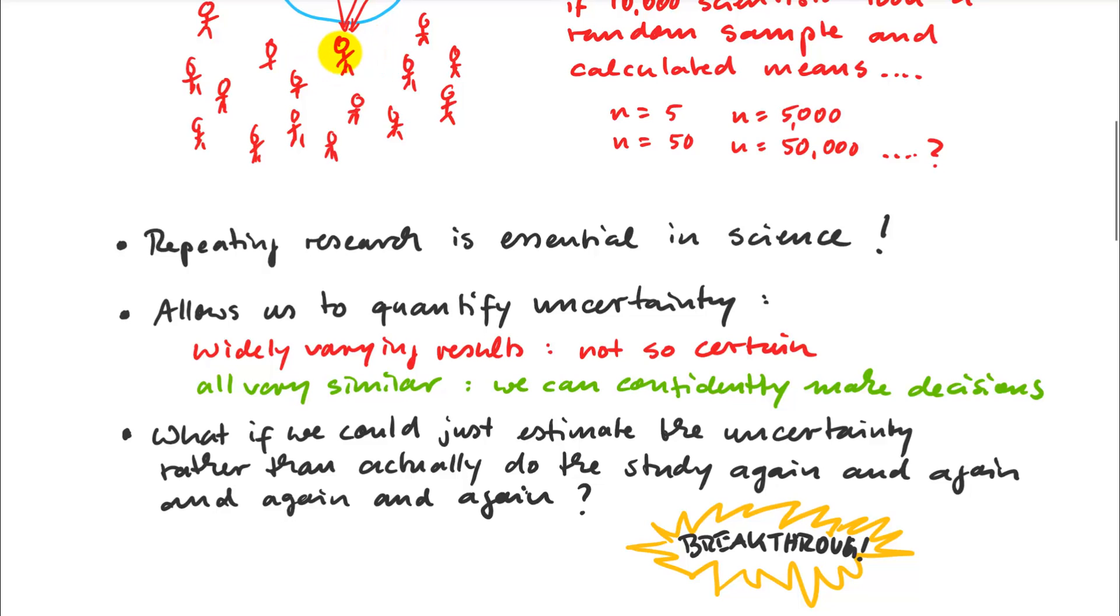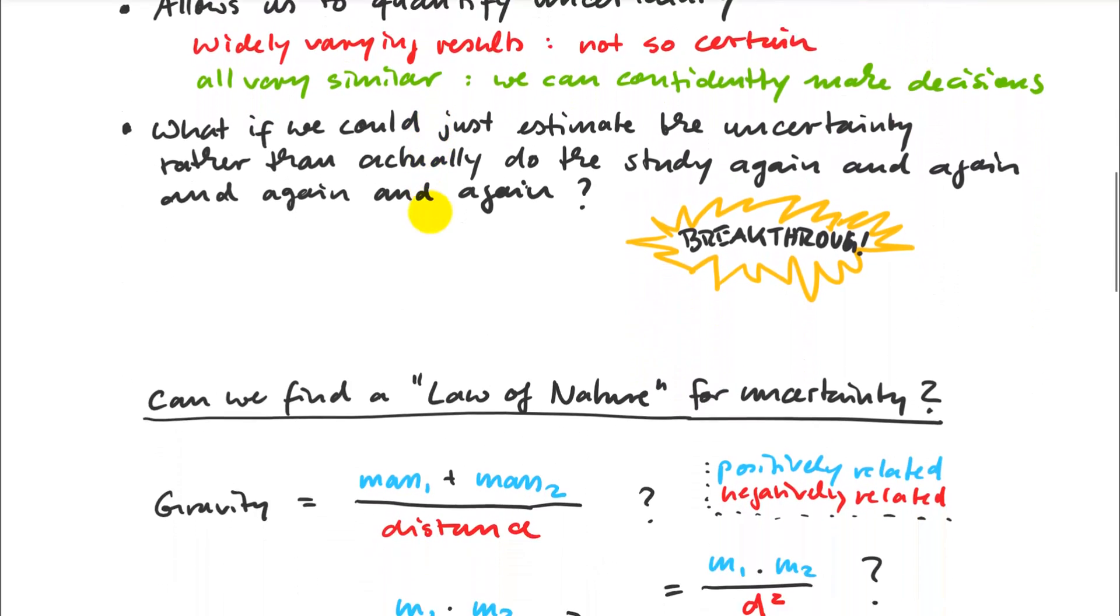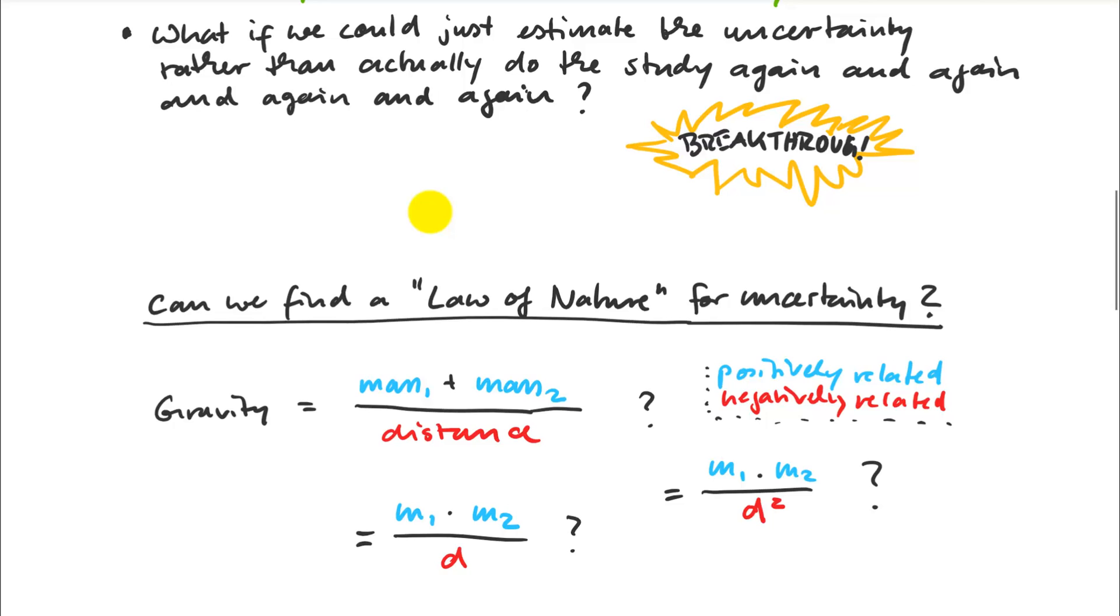So if one person could say, this is my sample, and I can deduct actually the distribution of the means. So that's the big breakthrough. That's the big deal in statistics. So if we can do that, we not only get a mean, but we also get a measure of uncertainty with it. So if we could find a law of nature for uncertainty, that would be really cool.